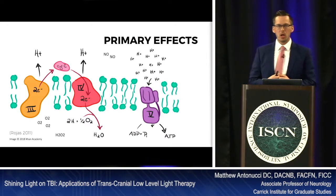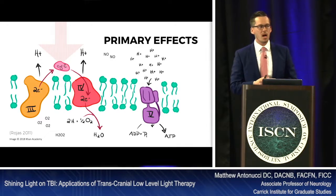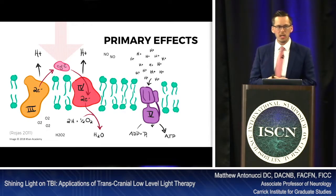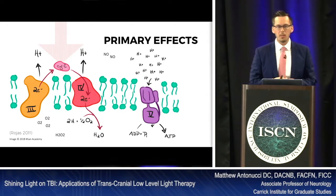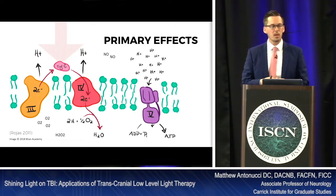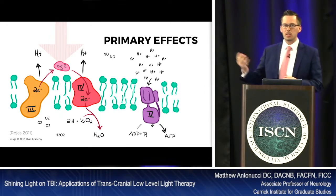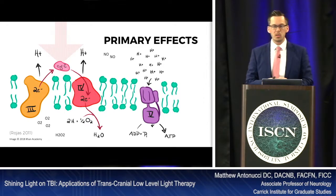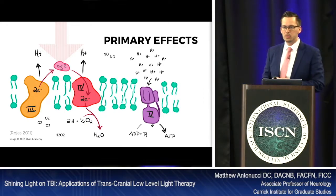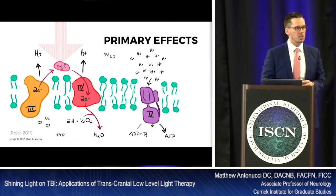When we get into the electron transport chain, the target of photobiomodulation is cytochrome C oxidase. Cytochrome C oxidase has a really important role in mitochondrial function — it's the last stage in reduction in the mitochondrial transport chain before we produce ATP. When light hits cytochrome C oxidase, it activates complex four of the mitochondrial transport chain, which takes hydrogen molecules and O2 (superoxide molecules) and converts them into water, releasing hydrogen protons into the extracellular space.